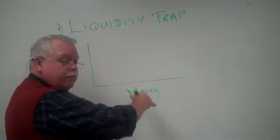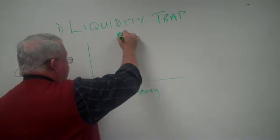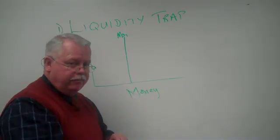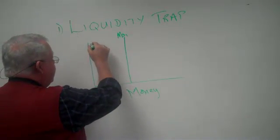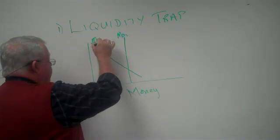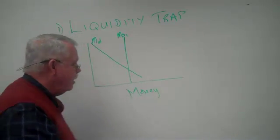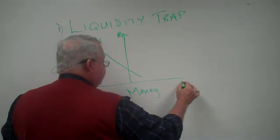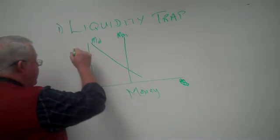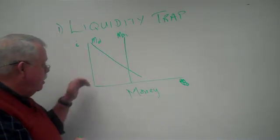The supply of money is going to be a fixed amount, whatever the Fed says it's going to be. We'll make it an inelastic supply, a vertical line. Here is the money supply number one at the current time. And then we're going to have a negatively sloped money demand curve.